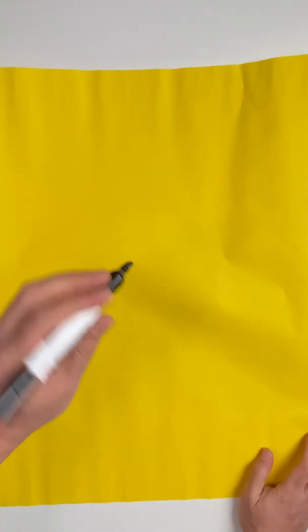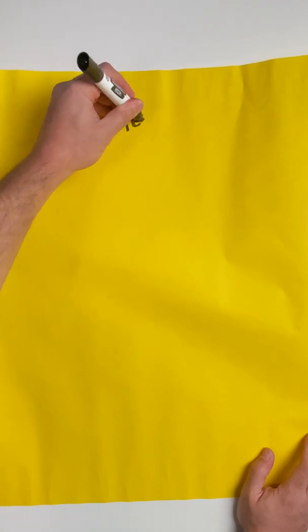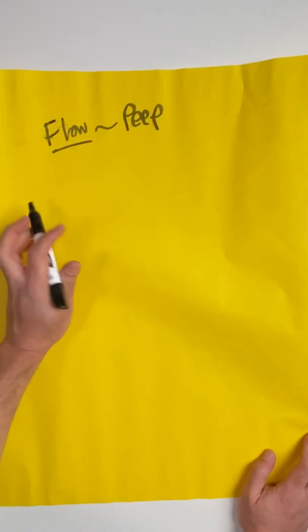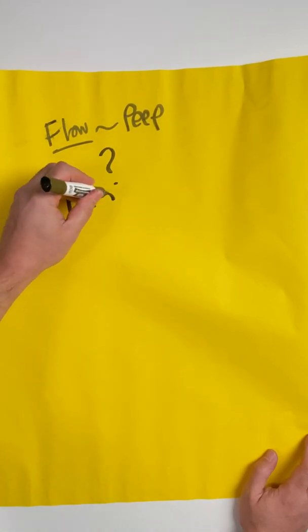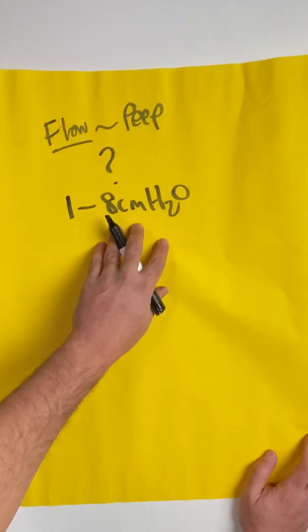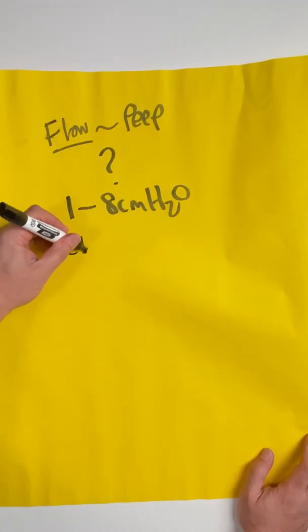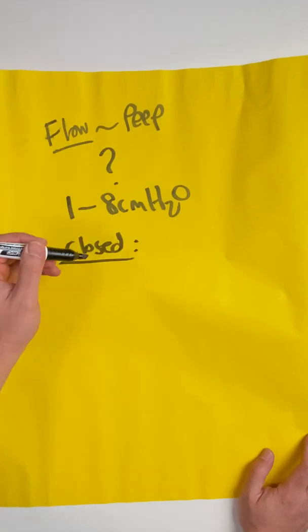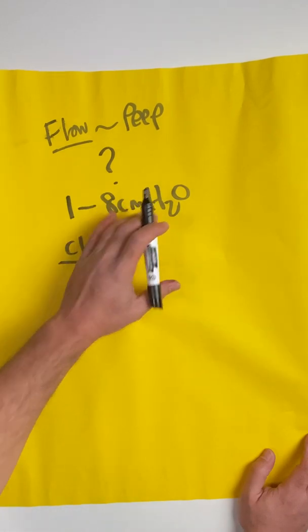The next bit is a little bit controversial, and there isn't agreement in the literature. But because you're providing so much flow for this patient, you're actually generating some positive end expiratory pressure. Now how much end expiratory pressure? No one really knows. You'll read literature that says anywhere from one centimeter of water all the way up to eight centimeters of water. The reason why the literature is all over the place is because a lot of this depends on the patient's physiology. It depends on their upper airway structures, their body habitus, if the patient's keeping their mouth closed. To generate PEEP and the benefits of high flow, the patient has to keep their mouth closed.